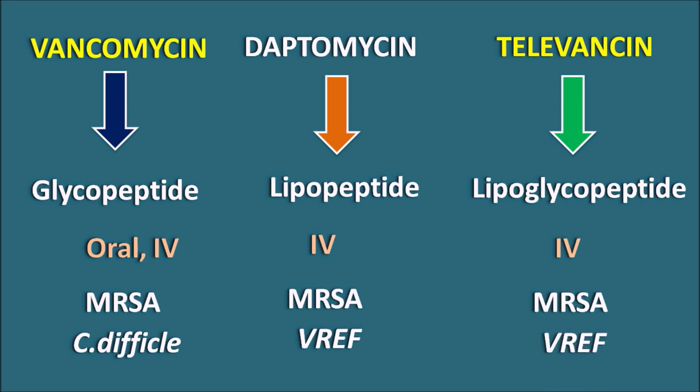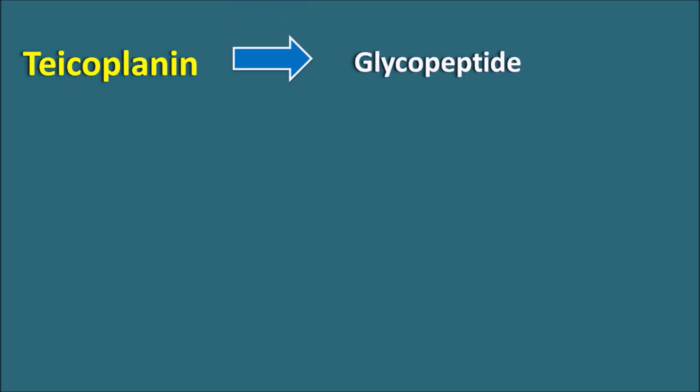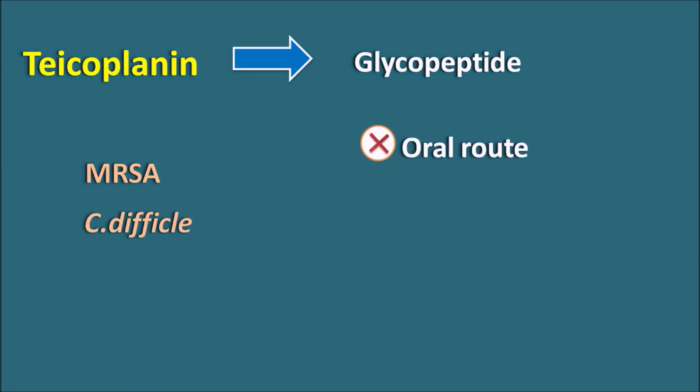All three drugs — vancomycin, daptomycin, and telavancin — are peptide drugs with a similar mechanism of action: they inhibit cell wall synthesis in bacteria, making them useful in various bacterial infections. However, vancomycin is the only one suitable by the oral route, whereas daptomycin and telavancin are not. Another related drug is teicoplanin, also a glycopeptide related to vancomycin, used in MRSA and Clostridium difficile infections, but given only by IV or intramuscular route.